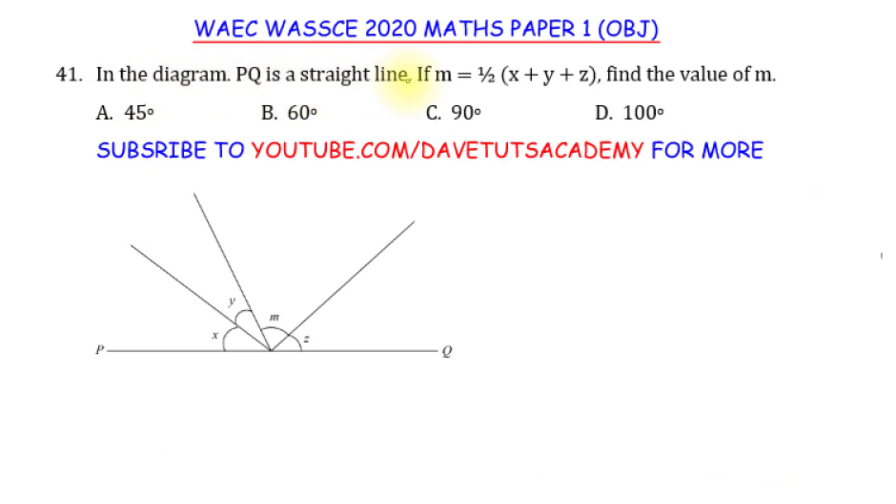In the diagram, PQ is a straight line. This line PQ is a straight line. Now, if M is half of the sum of X, Y, and Z, we are to find the value of M. What will help us first is that we should note that M was giving us 1 over 2 of X plus Y plus Z. And all that we have on this straight line, they only constitute X, Y, Z, and the M that we have been given.